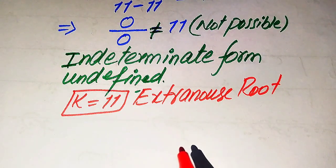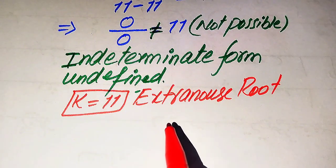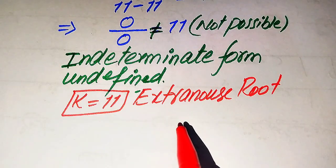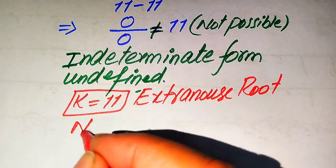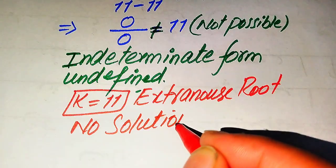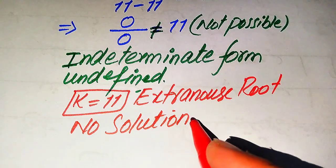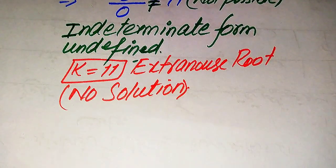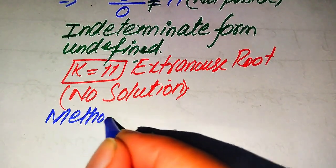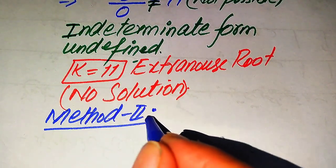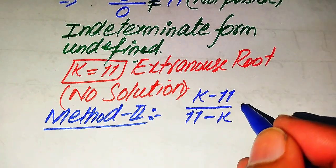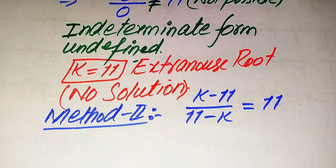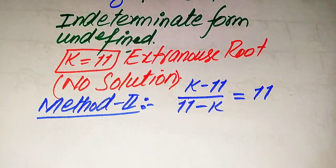Since k equals 11 does not satisfy the equation and we cannot find any other value of k that does, we conclude that this equation has no solution. That is the final conclusion of the first method. Now we solve this problem using the second method. We copy down the given equation: (k minus 11) divided by (11 minus k) equals 11.